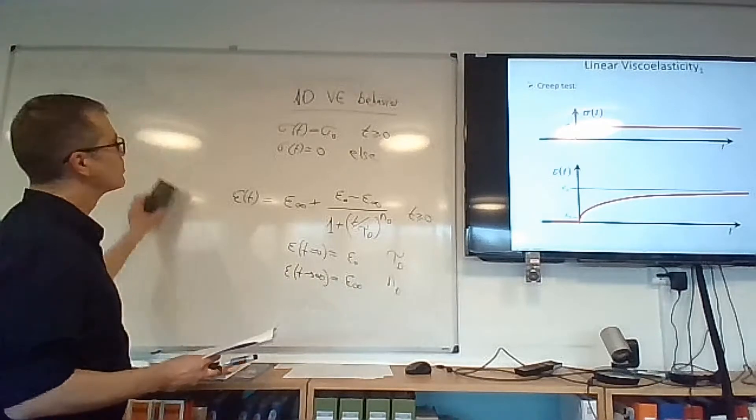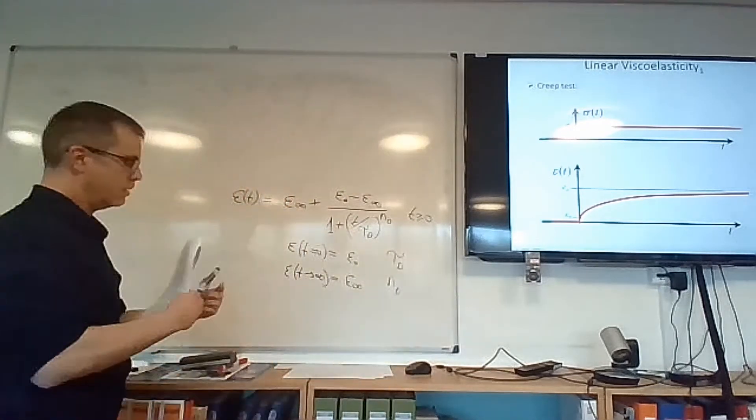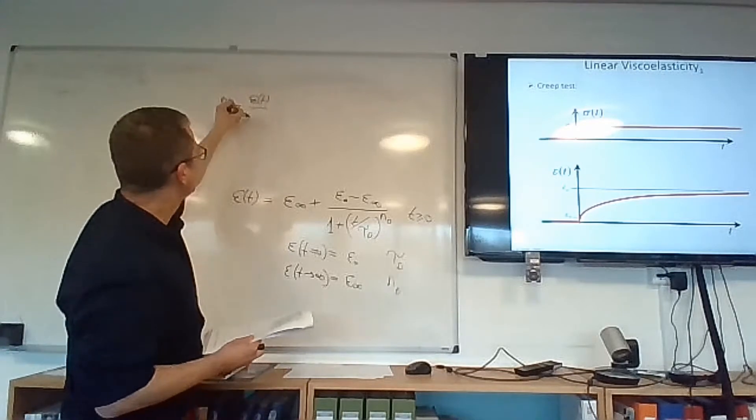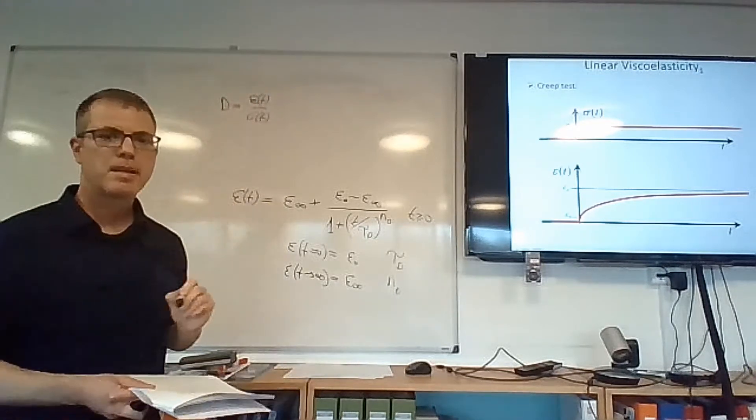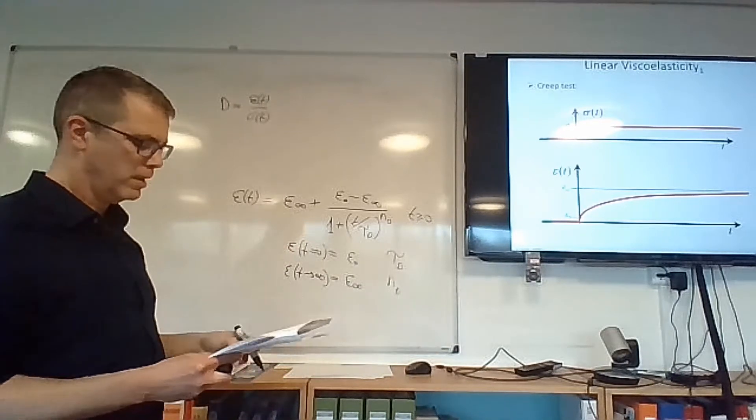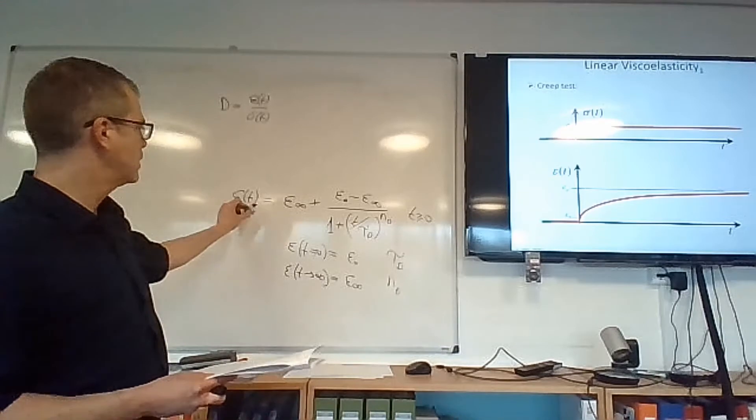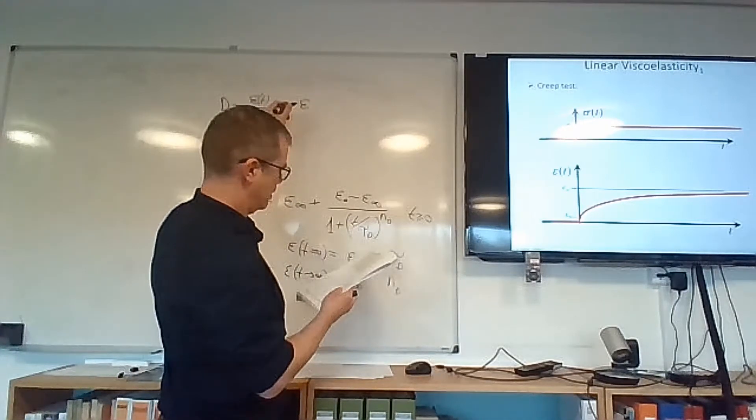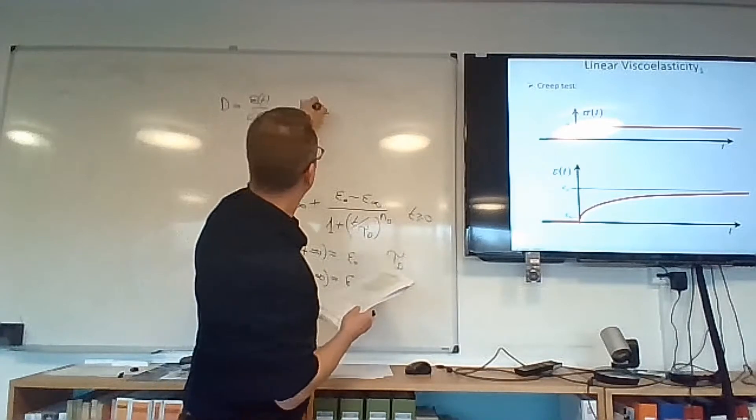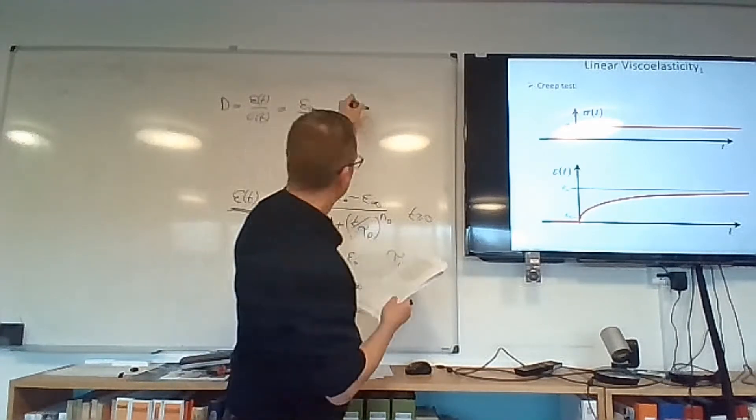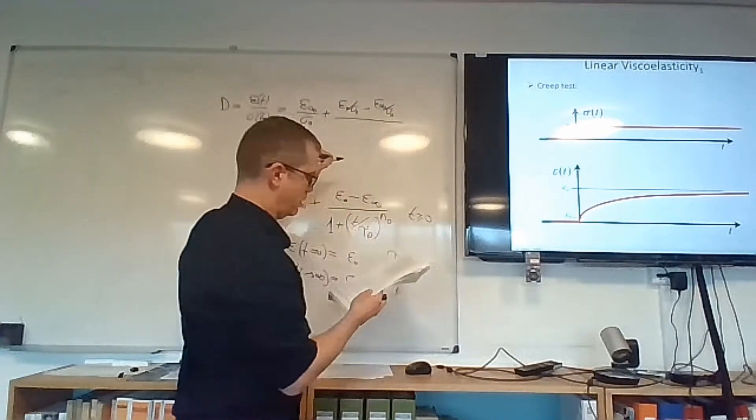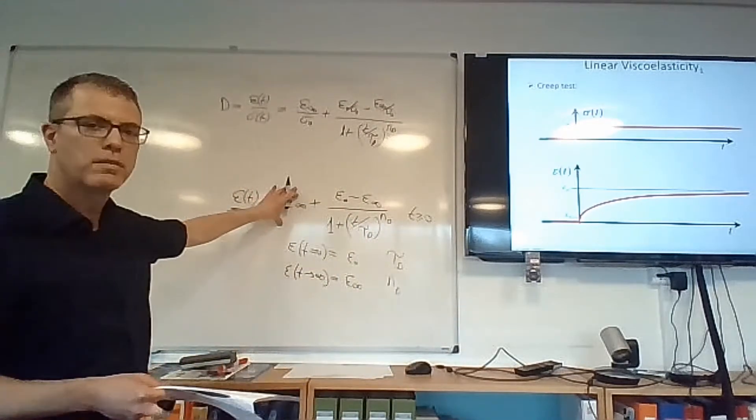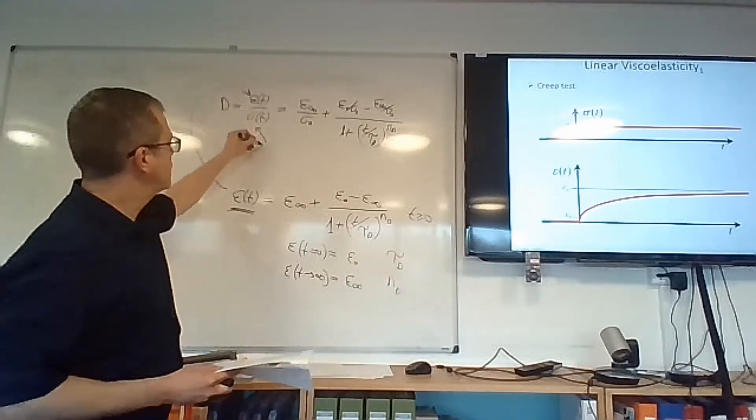Now, if you remember, and I have to remove something here. For elastic materials, we defined the compliance to be strain at any time t divided by stress. And in the case of elastic materials, this ratio ended up to be a constant value. In our case, we just plug in epsilon at any time t here. And this is going to be sigma zero, which is a constant stress in the creep test. And we find the following. Epsilon infinity divided by sigma zero plus epsilon zero divided by sigma zero minus epsilon infinity divided by sigma zero. And everything is divided by one plus t over tau d to the power of n. So, this is just plugging in the strain that is observed in the creep test.